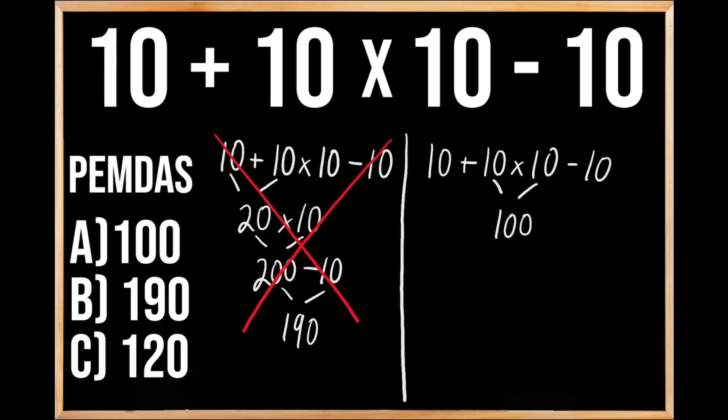Then we're going to bring down the rest of the problem. So we have 10 plus 100 minus 10.